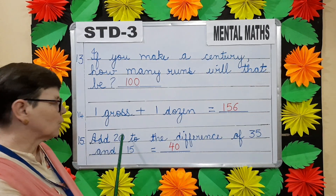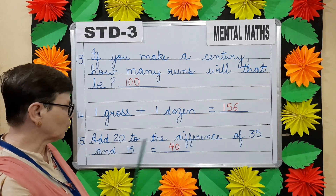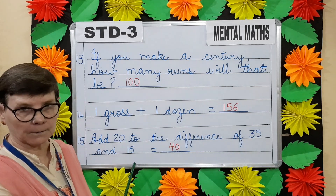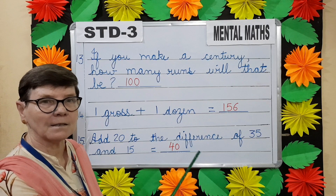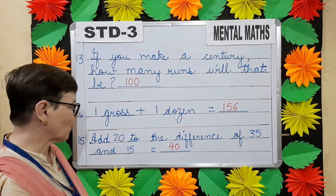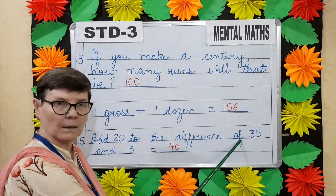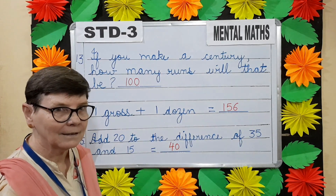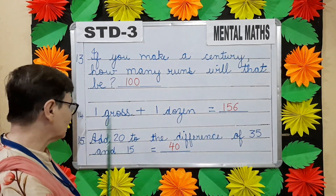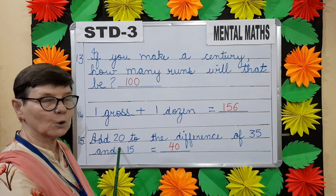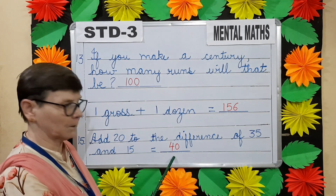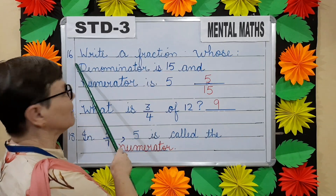Question number fifteen. Add twenty to the difference of thirty-five and fifteen. Difference means subtract. Subtract fifteen from thirty-five — what will you get? Twenty. Add twenty to this twenty. So twenty plus twenty will give you forty.